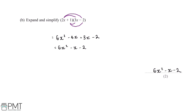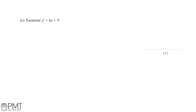This question is worth two marks: one mark for the original expansion and the second mark for the correct answer. Factorise x squared plus 6x plus 9. When factorising quadratics we want to find two numbers which multiply together to make the constant — the numerical term on the end — and two numbers which add together to make the x coefficient, which is 6 here.